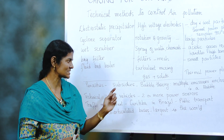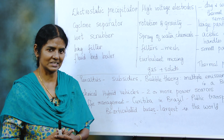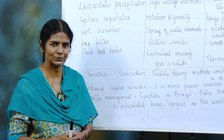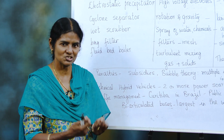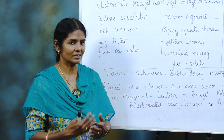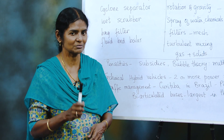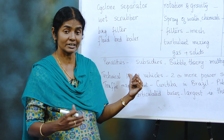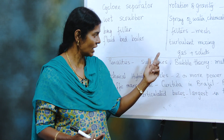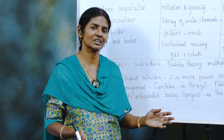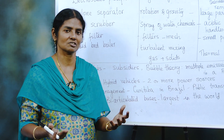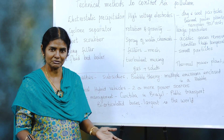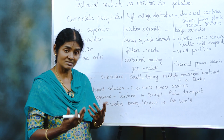Now we go to penalties and subsidies. When vehicles and population are on the rise, we have to control emissions in some way. If somebody does a good thing, you give them a chocolate — that's a subsidy. If they continuously do something bad, you give them a punishment — that's the penalty. Penalties monitor and regulate emissions and air pollution, while subsidies are given for vehicles with very less emissions.